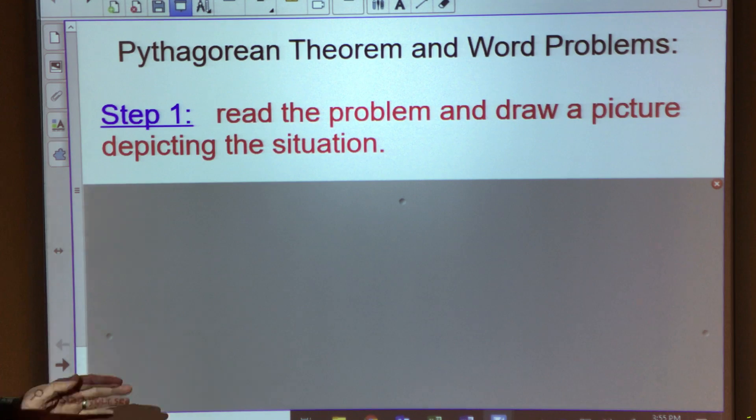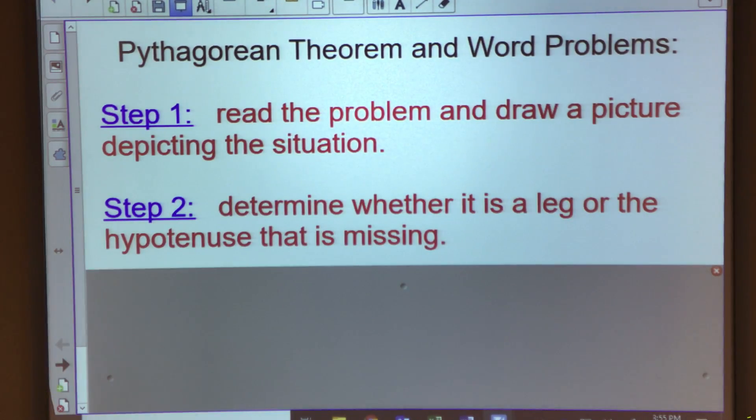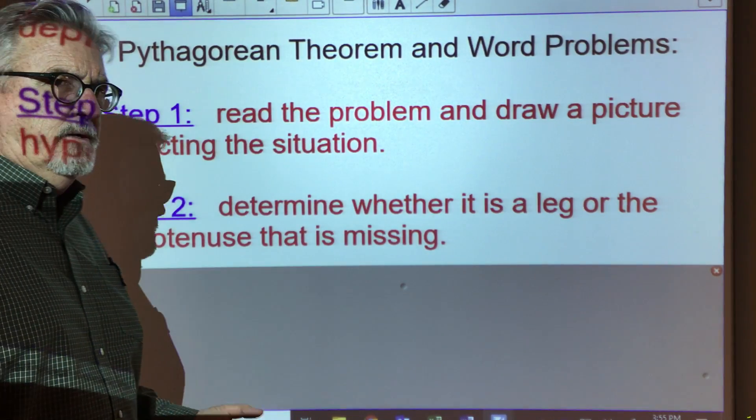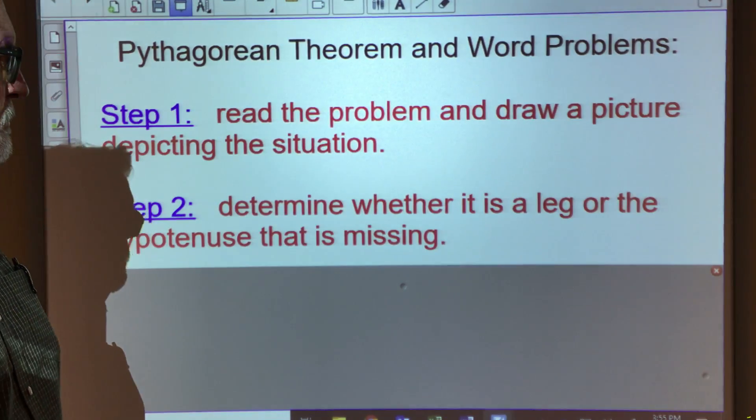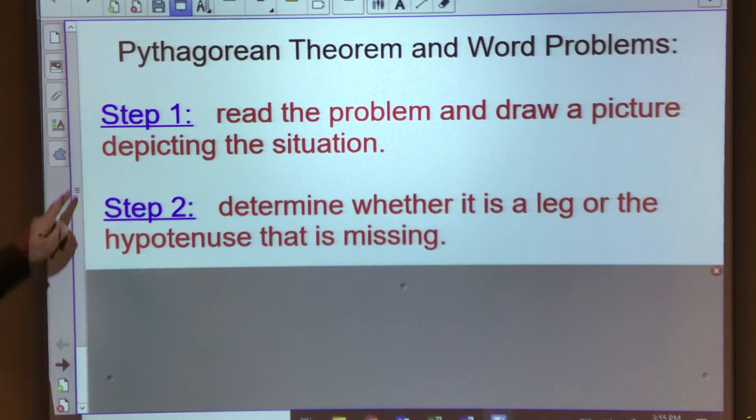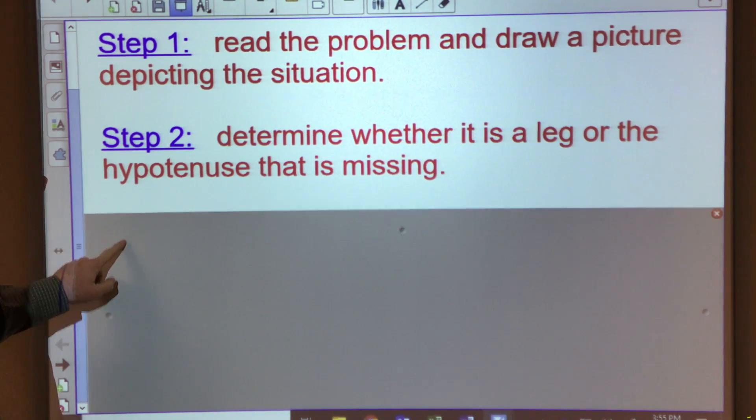And step back and look at it. And then we're going to try to determine, in step number two, we're going to try to determine whether it's a leg or a hypotenuse that is missing. And that's going to be critical for us when we go to substituting in our numbers into our Pythagorean Theorem.